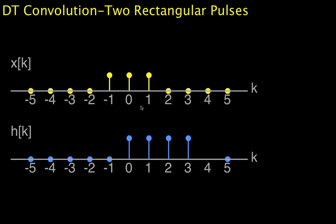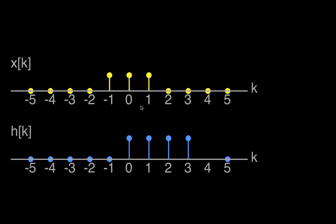Hello and welcome to this video in which we will find the discrete time convolution of two discrete time rectangular pulses. You can see on the screen we have x of k and h of k, and both of them are rectangular pulses. They go between values of 0 and 1. The goal here is to show you how to do the convolution of these, and our goal is to compute y of n, which is the convolution of x with h.